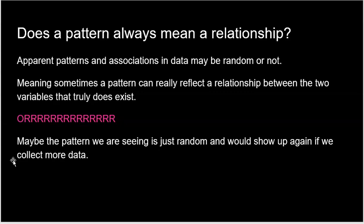We do live in a world where a lot of random things happen. So are we seeing something meaningful, or is it just pure randomness? That's going to be a big theme as we look at relationships between two variables. All right, that's it for Topic 2.1 — it's an intro topic to what we're going to be learning. Now we're going to start really looking at categorical variables and how two of them can be related.